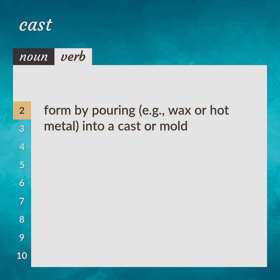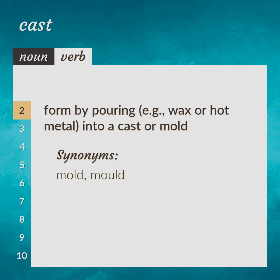To form by pouring, e.g., wax or hot metal, into a cast or mold. Example: cast a bronze sculpture. Synonyms: mold.